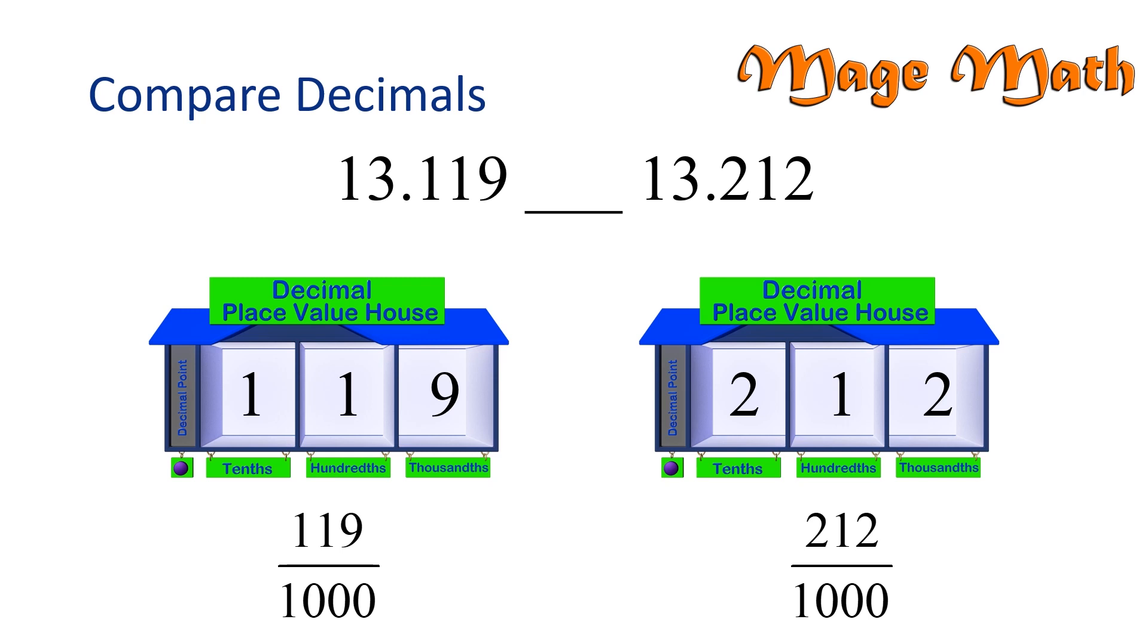The first fraction means we have 119 parts out of 1,000 total parts, or we say 1,000 as the whole. And the second fraction means we have 212 parts out of 1,000 total parts. Which fraction has less parts to the whole? That's right, 119 thousandths has less parts than 212 thousandths. Let's put the appropriate symbol in between the original numbers.